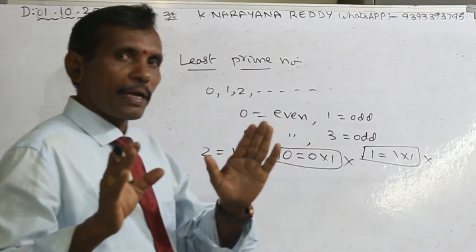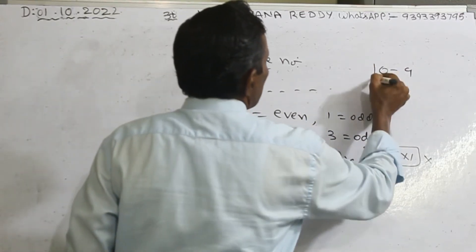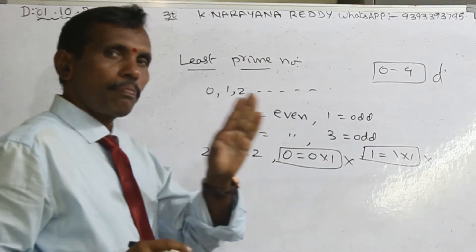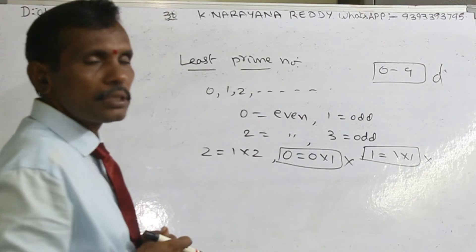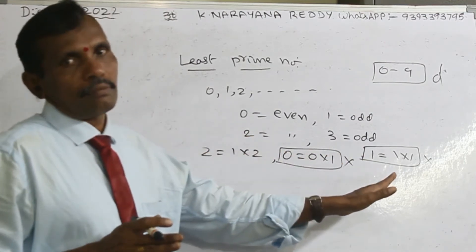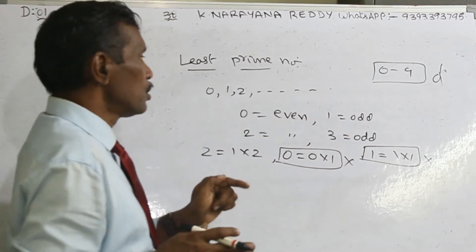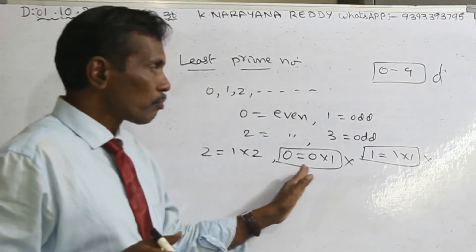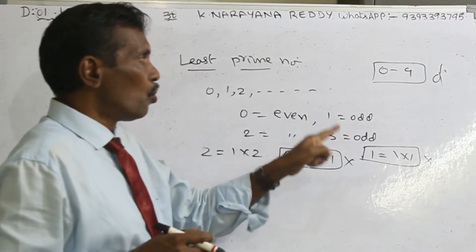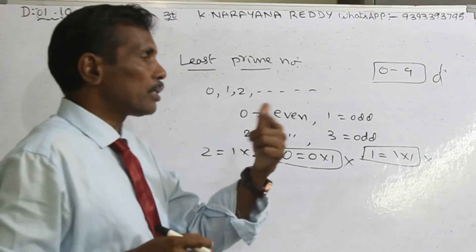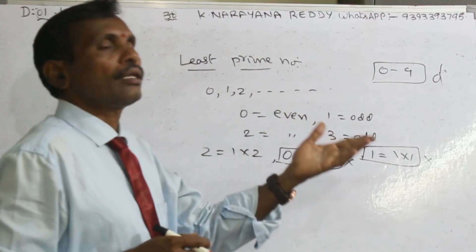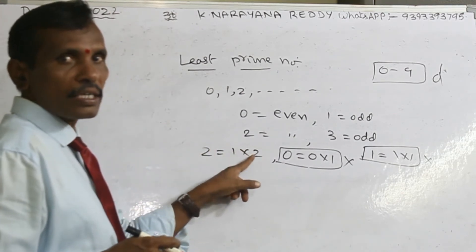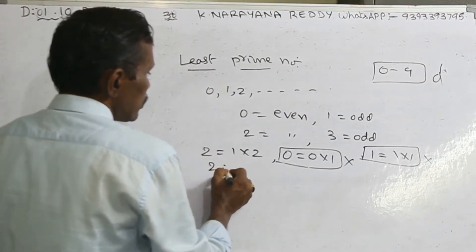Actually, 0 and 1 are called prime digits, not prime numbers — please remember that. 0 to 9 are digits. So 0 and 1 are not prime digits. Why? Because 0 times 1 equals 0 — zero itself — but there is no other factor, that is why 0 is not a prime digit. And 1 is also not a prime number or prime digit, because 1 in itself means both factors are the same — 1 is the only factor of 1, not other than 1. For 2, the factors are 1 and 2 — two factors — that is why 2 is a prime digit.